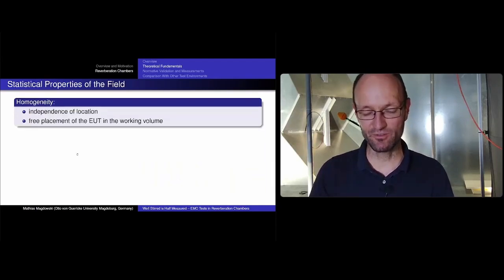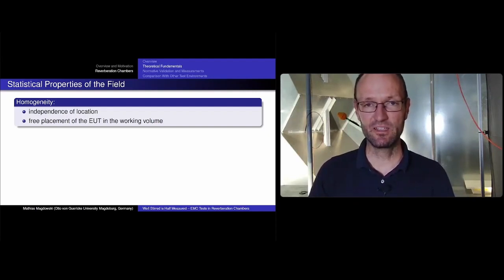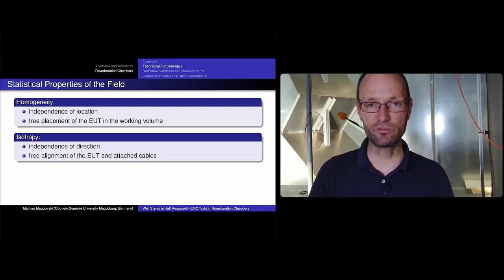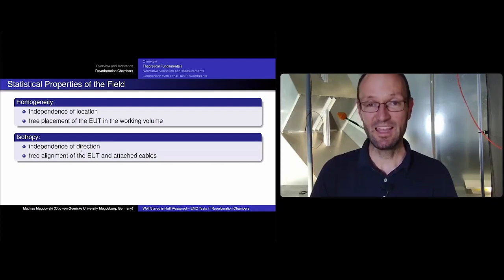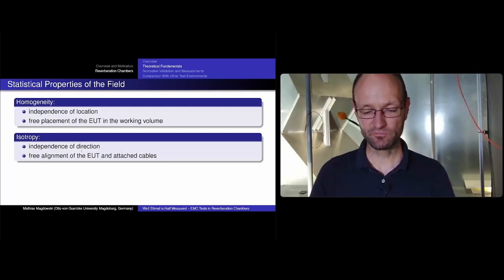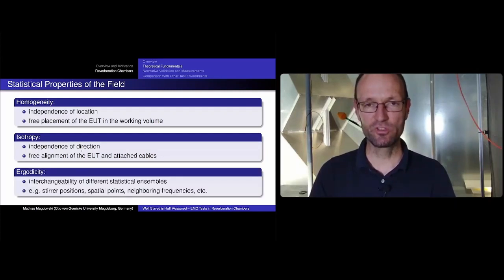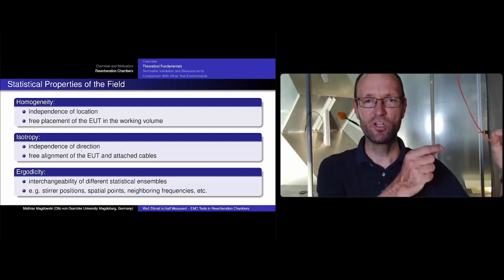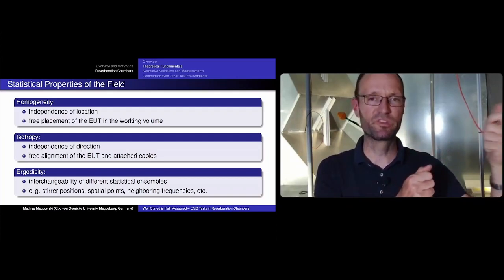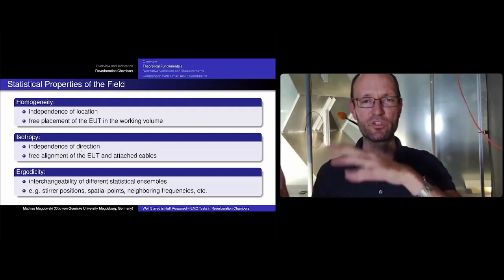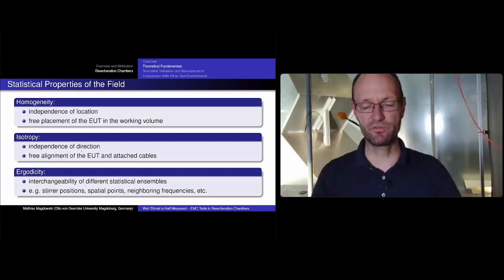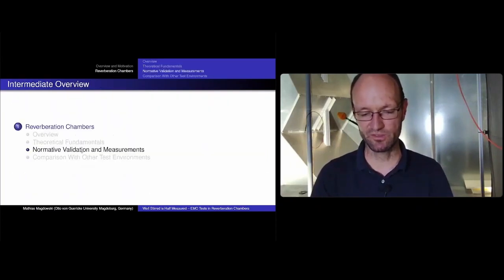The statistical properties of the reverberation chamber field are: first, statistically homogeneous — it doesn't matter where we place the device under test; second, isotropic — it doesn't matter in which direction the device and cables are oriented; and third, ergodic — meaning statistical ensembles are interchangeable, so measuring the field for different stirrer positions and averaging is equivalent to measuring the field at different spatial positions.